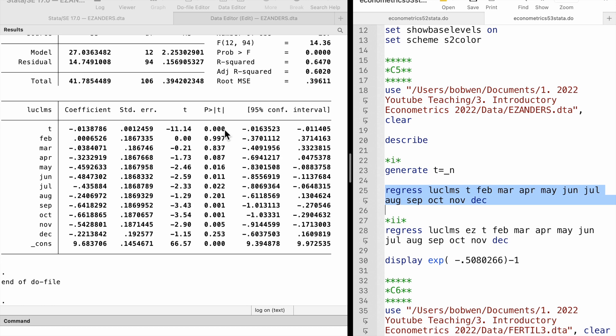There is seasonality in unemployment claims. The summer and autumn months saw lower unemployment claims than the winter and spring months. We use January as the base month in the model. The coefficients on the summer and autumn monthly dummies are negative and significant.